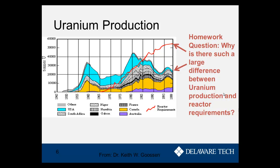I wanted to show you this graph of uranium production over the years. If we look back in 1945-1950, uranium production really started after a nuclear bomb was dropped. We see that we had a lot of uranium production without any reactor requirements before 1965, because the first commercial reactors were made in the mid-1960s. Then we get more and more reactor requirements. And in the late 90s, and the same as today, we don't mine as much uranium as we use. I want you to think about why there could be such a large difference recently between uranium production and uranium consumption in nuclear reactors.